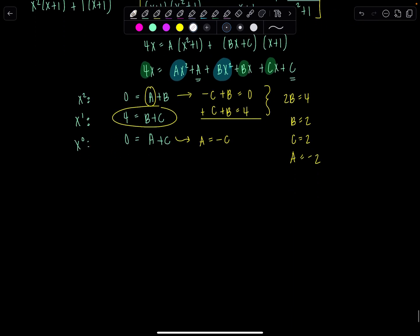Now we're ready to roll. So we can go back to our integral. And we have now a, which is negative 2 over x plus 1, plus bx plus c, 2x plus 2, over x squared plus 1 dx.